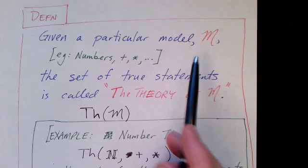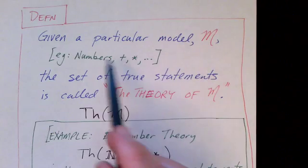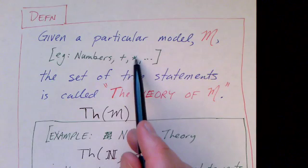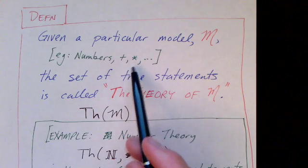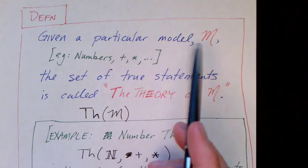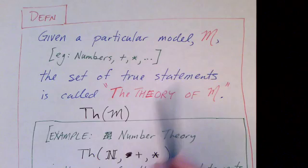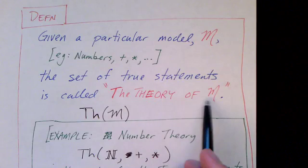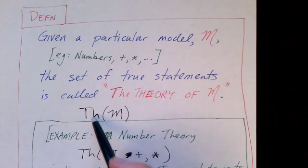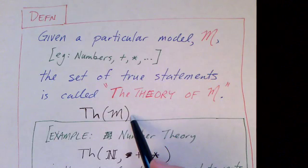We can give a name to the set of true statements. So let's consider a particular model consisting of, for example, the numbers and the addition and multiplication operations. And we can then talk about, relative to that model, the set of statements that are true in that model, and we call that the theory of M, where M is the model. So this is a set of those statements that are true.